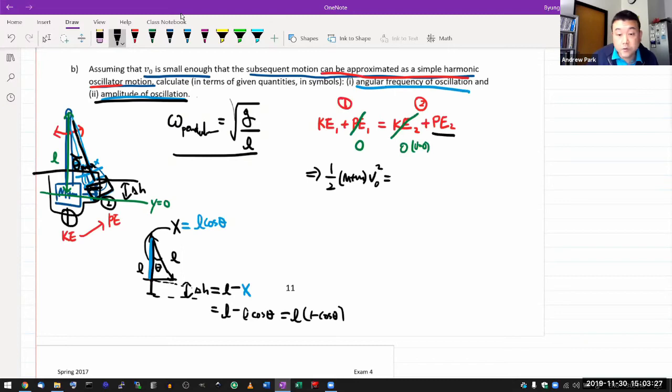So putting that into the expression for gravitational potential energy on the right-hand side, it's going to be mass times G times the change in height, which will be L times 1 minus cosine theta. And this theta is the theta max or the amplitude of oscillation. And the rest is going through, rest of this question is going through this algebra and solving it for theta max.